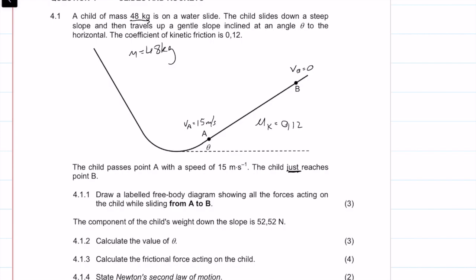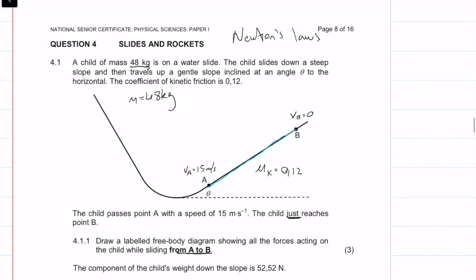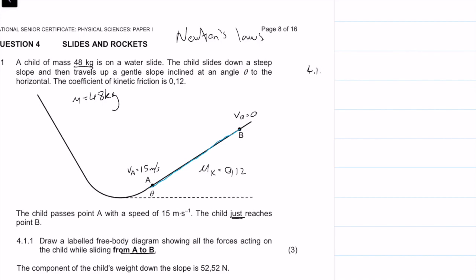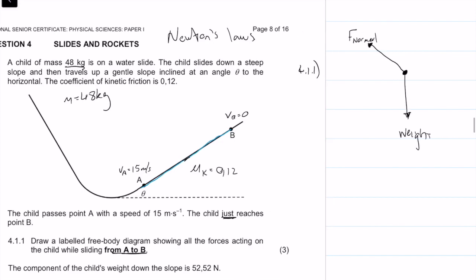Question 4.1.1: draw a labeled free body diagram showing all forces acting on the child while sliding from A to B. We have a component of weight acting downwards. The child is in contact with the slope, so there is a normal force. There is also a frictional force — since motion is up the slope, friction acts down the slope. That gives us three marks.